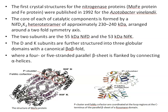The first crystal structures for the nitrogenase proteins — molybdenum-iron protein and iron protein — were published in 1992 for Azotobacter vinelandii. The core of each catalytic component is formed by a NifD2K2 heterotetramer of approximately 230–240 kDa, arranged around a two-fold symmetry axis. NifD and NifK are proteins: NifD is 55 kDa and NifK is 53 kDa.